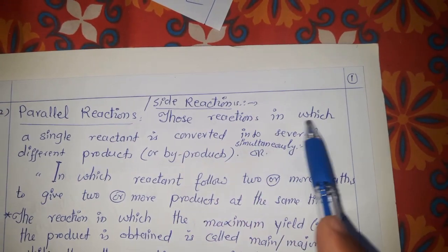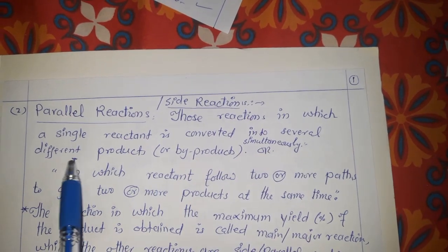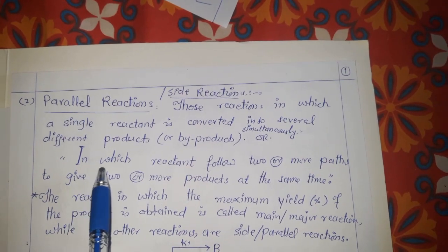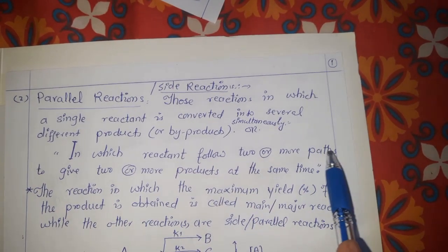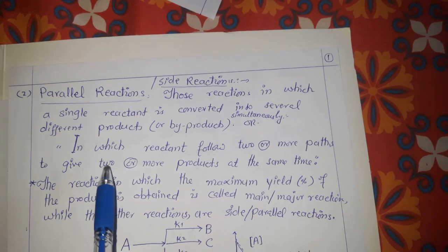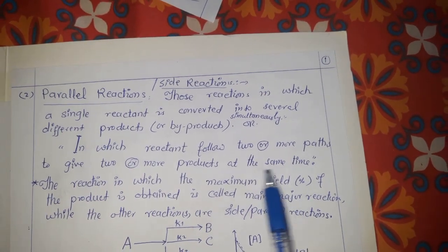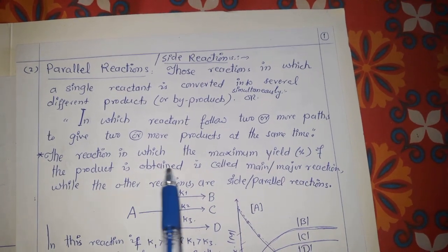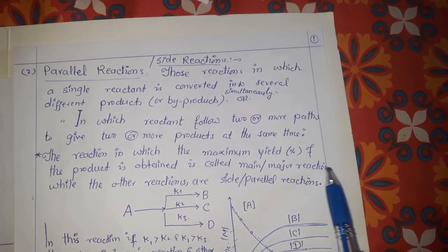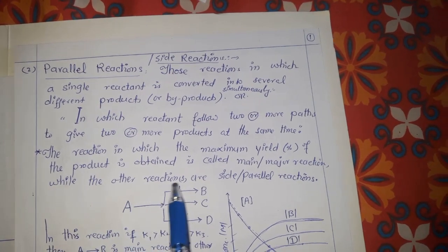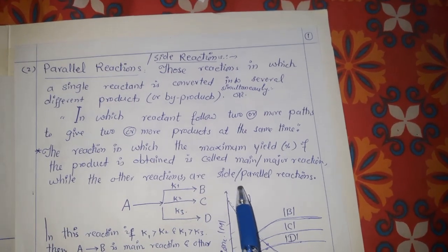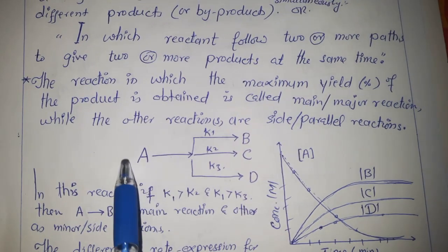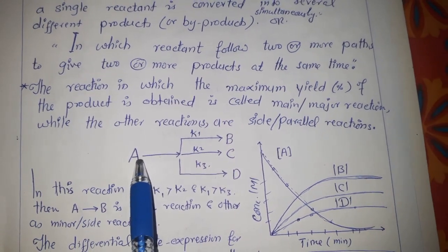So what are side reactions? Side reactions are those reactions in which a single reactant is converted into several different products or byproducts simultaneously, or those reactions in which a reactant follows two or more paths to give two or more different products at the same time. The reaction in which the maximum yield of the product is obtained is called the major or main reaction, while the others are known as side or parallel reactions.